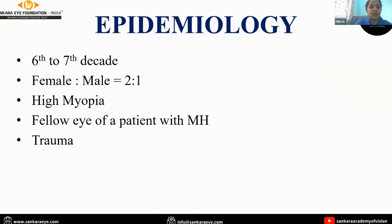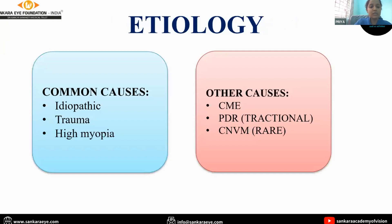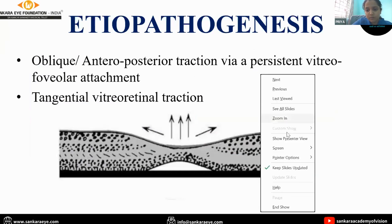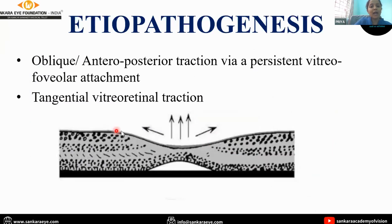In higher myopes, it is commonly seen. In the fellow eye of a patient with macular hole, the incidence is 15 to 20 percent, and in trauma patients it is about 5 percent. Common causes include idiopathic, trauma, and high myopia. Other causes include cystoid macular edema, tractional component of PDR, and it is rarely seen in CNVM patients. Oblique or anteroposterior traction via a persistent vitreofoveal attachment or tangential vitreoretinal traction leads to macular hole formation.